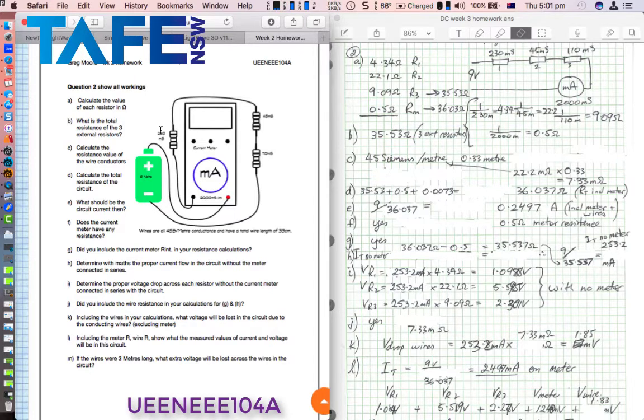The first question was calculate the value of each resistor in ohms. We know that conductance, the larger the value of conductance, the better the conductor is, so therefore the lower the resistance is because it's a reciprocal of the resistance.